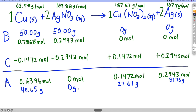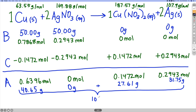A final check — and this is the value of doing a BCA chart — is to verify conservation of mass. We started with two reactants of 50 grams each, so the total starting mass was 100 grams. Adding the final amounts: 31.75 + 27.61 + 40.65 = 100.01 grams. That tiny 0.01 gram discrepancy is just rounding error introduced at each calculation step. Essentially, I started with 100 grams and ended with 100 grams — mass is conserved.